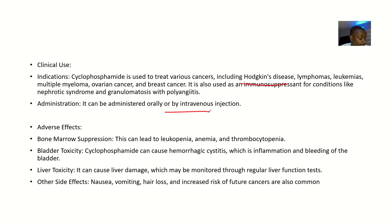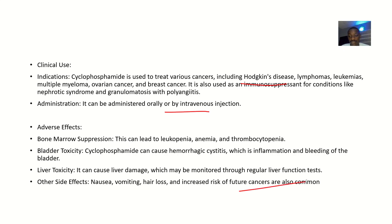Adverse effects of cyclophosphamide include bone marrow suppression, bladder toxicity, and liver toxicity. Other side effects include nausea, vomiting, hair loss, and an increased risk of future cancers.